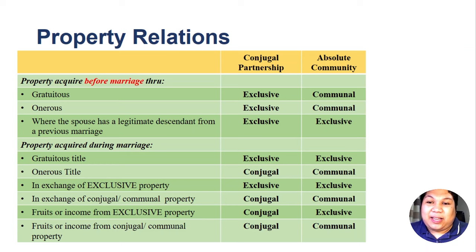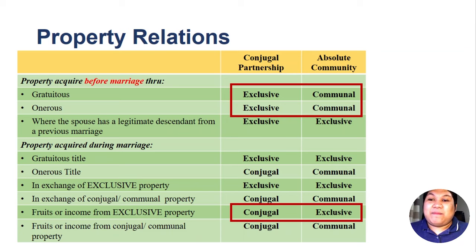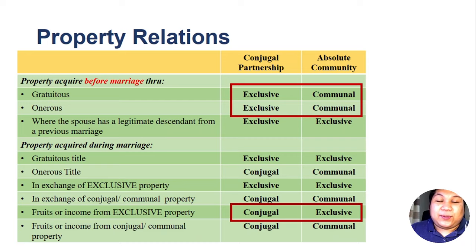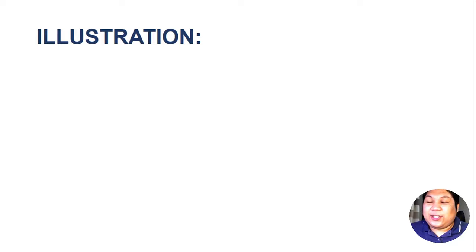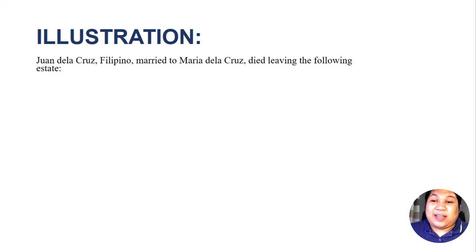To summarize, these two regimes differ only on the highlighted items — particularly regarding property acquired before marriage and fruits from exclusive property. All other rules are similar under both regimes. Now let's have an illustration. Juan de la Cruz, Filipino, married to Maria de la Cruz, died leaving the following estate.